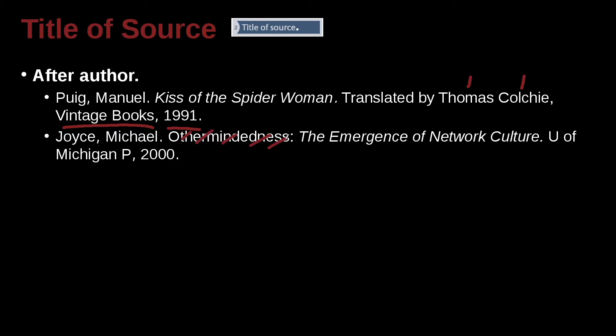Actually, this here should also be italicized. The Emergence of Network Culture. So this is the name of a book, and it's from University of Michigan. What does P mean? Press. That is one of the abbreviations MLA allows you to use.